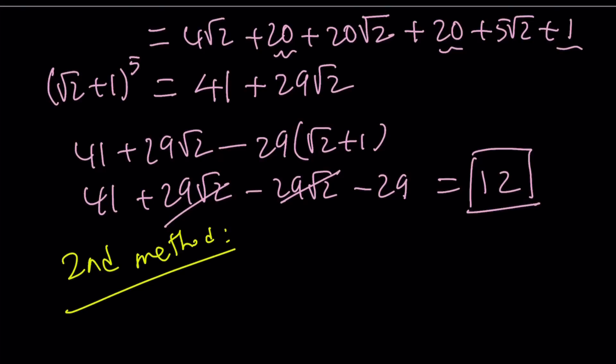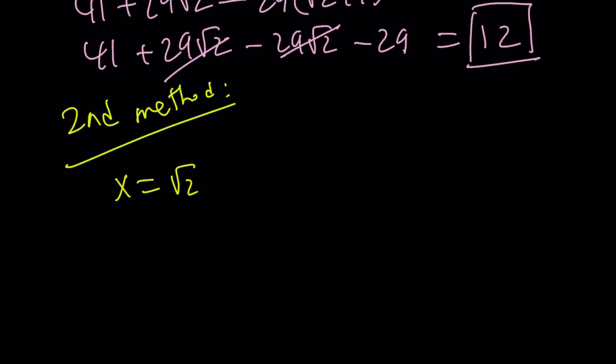Now for my second method, I'm going to use a different approach. So suppose x equals √2 + 1. From here, I'd like to isolate the radical, which in this case is square root of 2. So let's go ahead and subtract 1 from both sides.